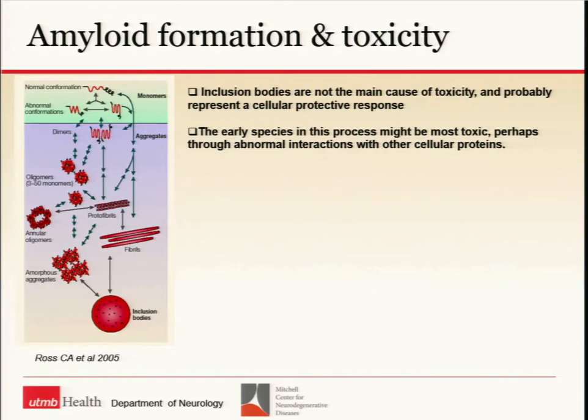When I was in Charlie's lab — he was a great mentor who allowed me to work with many proteins — we were able to prepare oligomers from almost every protein: A-beta, synuclein, IAPP, polyglutamine, prions. We prepared fibrils too. All oligomers were toxic at non-physiological concentrations; all fibrils were not toxic under the same conditions. The only one missing from that list was tau — not because I didn't try, but because I never succeeded in getting tau oligomers while in Charlie's lab.